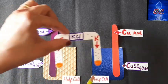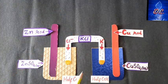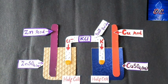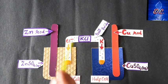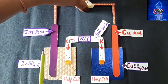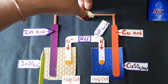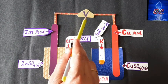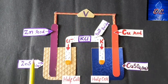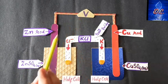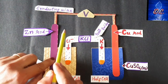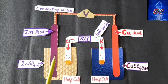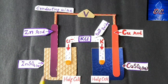Both half cells are connected through a U-shaped tube called the salt bridge. Both electrodes are connected through a conducting wire which is connected to a voltmeter or galvanometer — you can also connect a bulb to detect the flow of current. This completes the construction or structure of a galvanic cell.